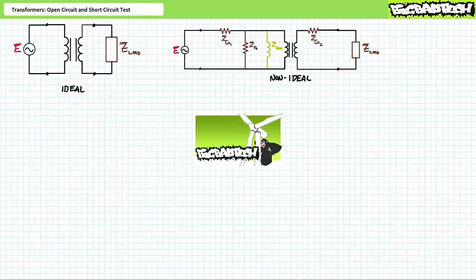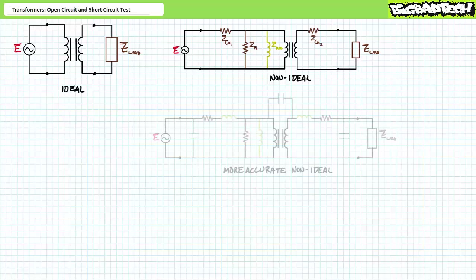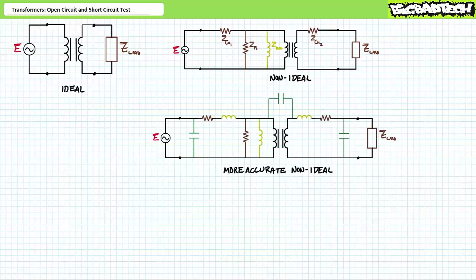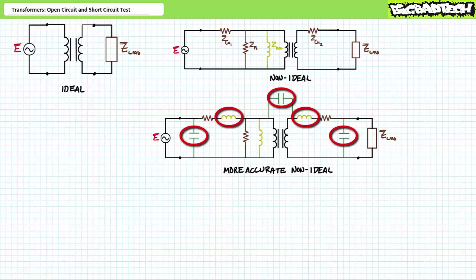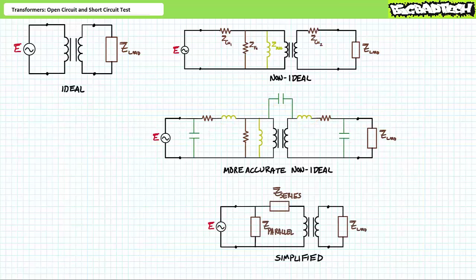Recall in the non-ideal transformers lecture, available at the Big Bad Tech channel, we introduced progressively more complex depictions of real-world transformers accounting for copper and iron losses as well as magnetizing or excitation current. As difficult as that lecture might have seemed, these models were only part of the picture — much more complicated and accurate depictions of transformers exist that account for other non-linearities including series inductive losses and capacitive coupling between the primary and secondary windings. You'll be glad to know that only in the most extreme of occasions does one need to go to this level of detail, and often simpler models will suffice.